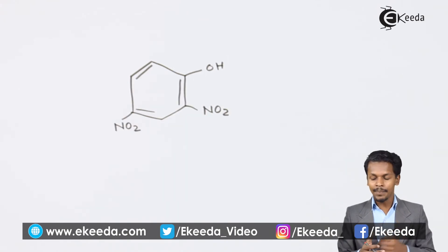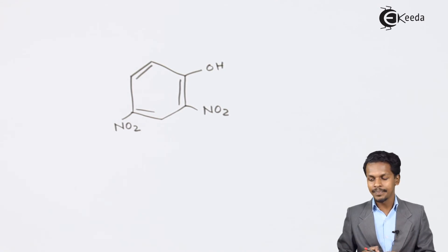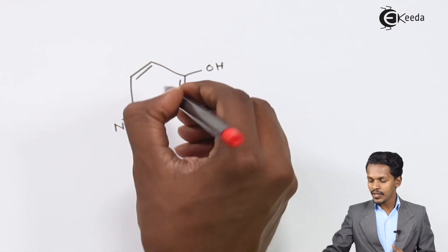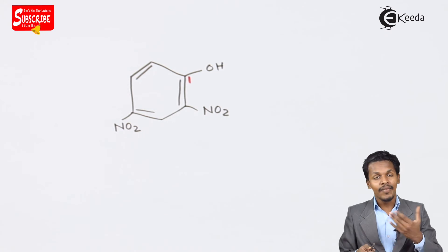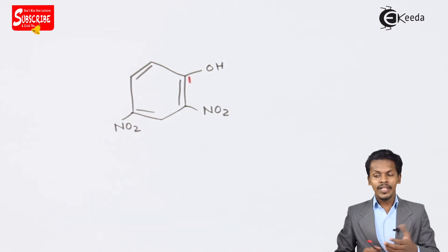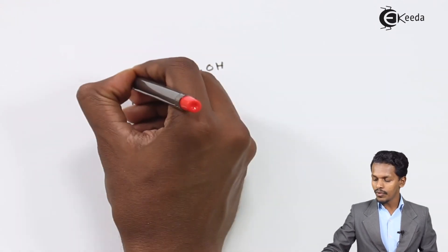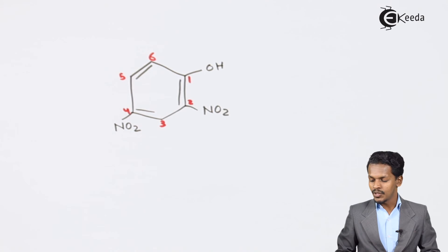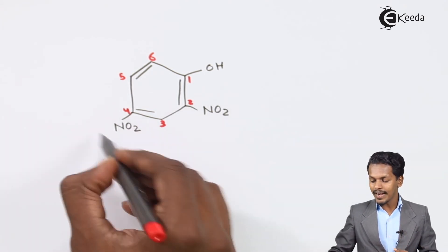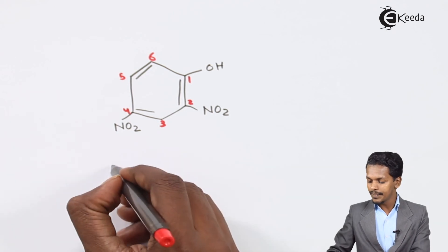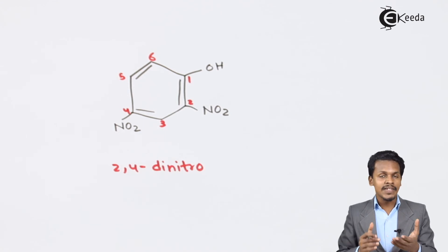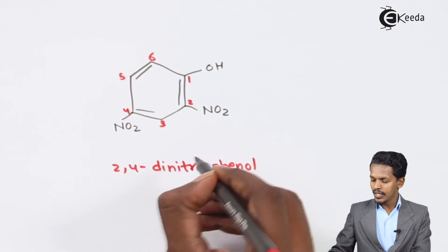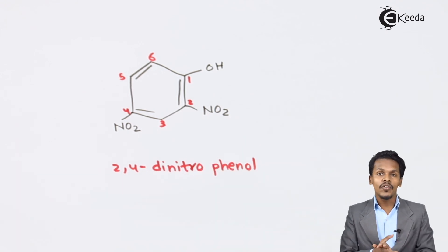The last example: OH is attached to carbon number 1. Carbon number 2 is assigned to the carbon nearest to a substituent. Numbering gives carbons 1 through 6. Two nitro groups are attached to the phenol ring at positions 2 and 4, so the compound is named 2,4-dinitrophenol.